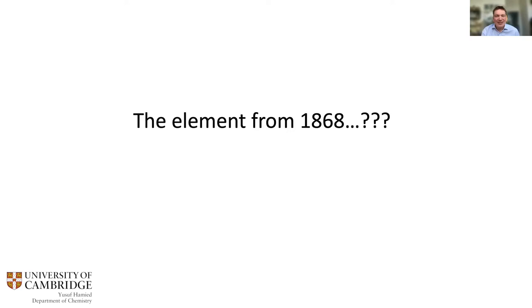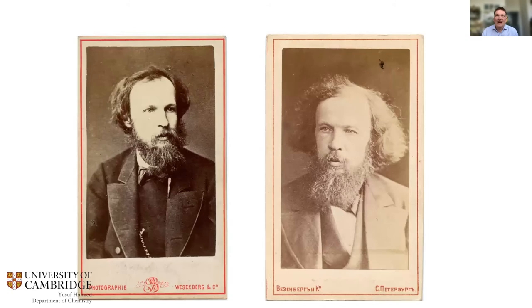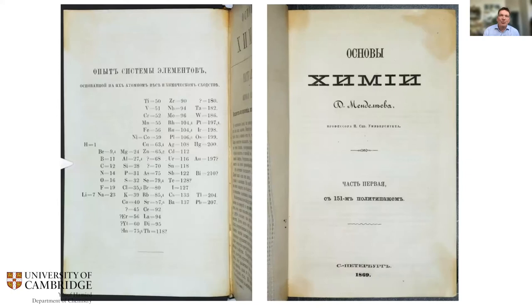Before then, we jump to Mendeleev. In 1869, he published his first formulation of the periodic table — his periodic law. He famously predicted new elements would be discovered, and noted that spectroscopy would be key because the remaining undiscovered elements were so dispersed in nature that only this sensitive technique could find them.